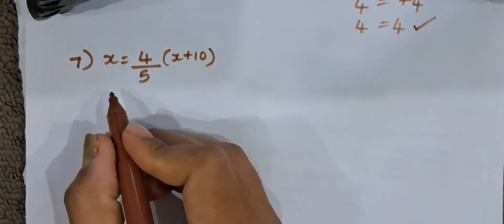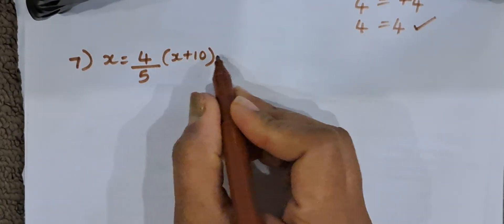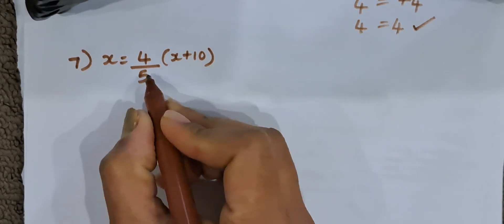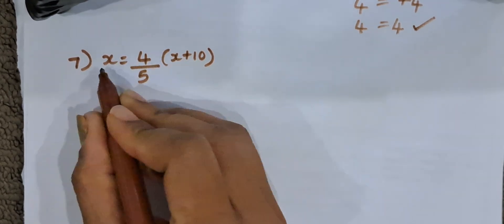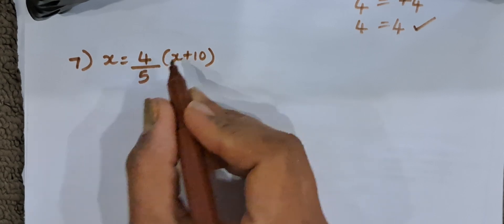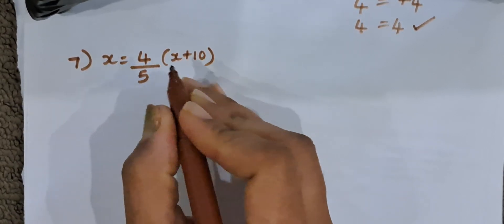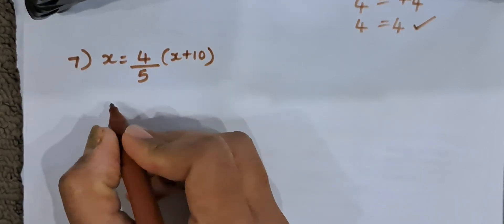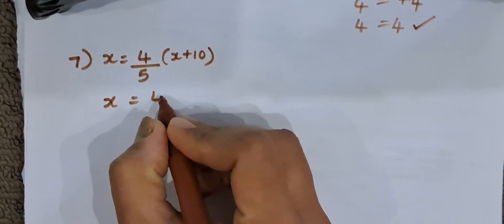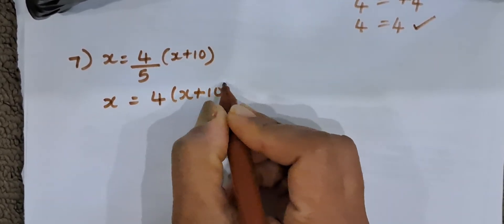Let us solve the seventh one. x is equal to 4 by 5 into x plus 10. Now we have to solve for x. There are x in two places — on the left hand side and right hand side. First, we will take all the x on the left hand side. So, x is equal to 4 into x plus 10.